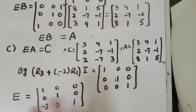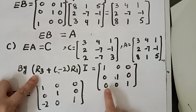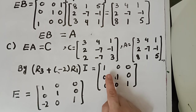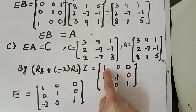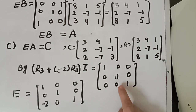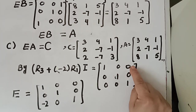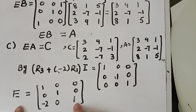When we do the row operation to I, we add negative 2 times R1 to the third row. So: 0 plus negative 2 times 1 gives negative 2; 0 plus negative 2 times 0 gives 0; 1 plus negative 2 times 0 gives 1. This is the required elementary matrix. The first requirement is complete.